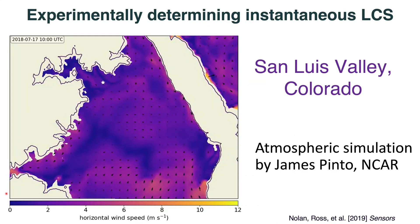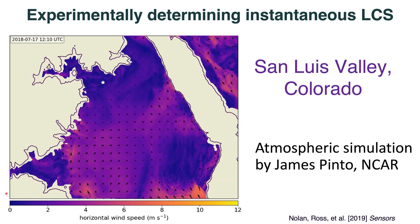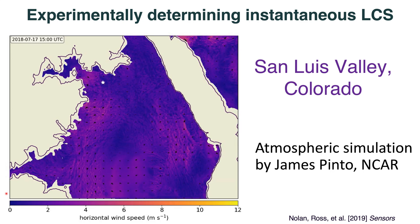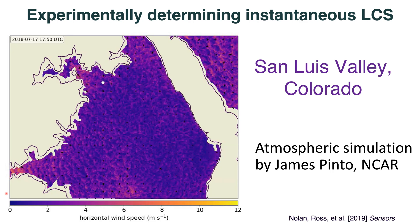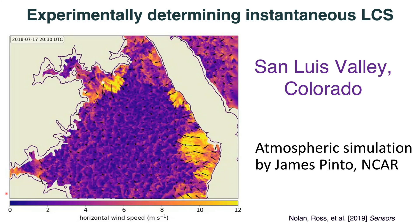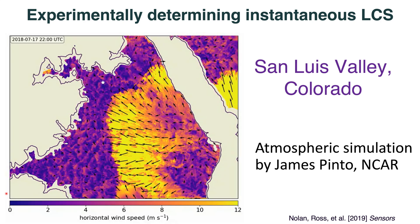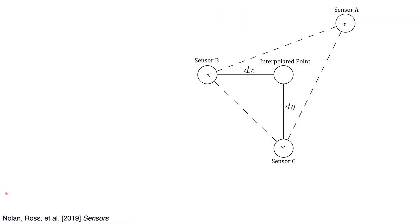In my final section, I'll describe how we experimentally measured instantaneous LCS during a field campaign in San Luis Valley, Colorado. The atmospheric simulation shown came from James Pinto from NCAR, the National Center for Atmospheric Research, showing a lot of interesting structures especially depending on the time of day. We placed three sensors: two drones and one fixed asset to determine the gradient of the velocity field at the interpolated point.